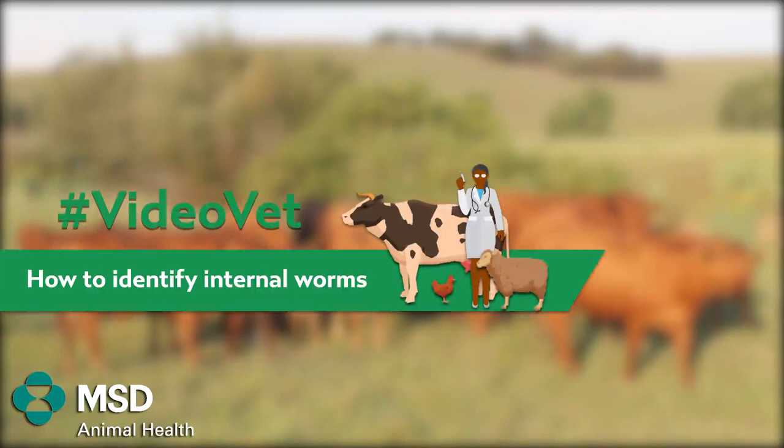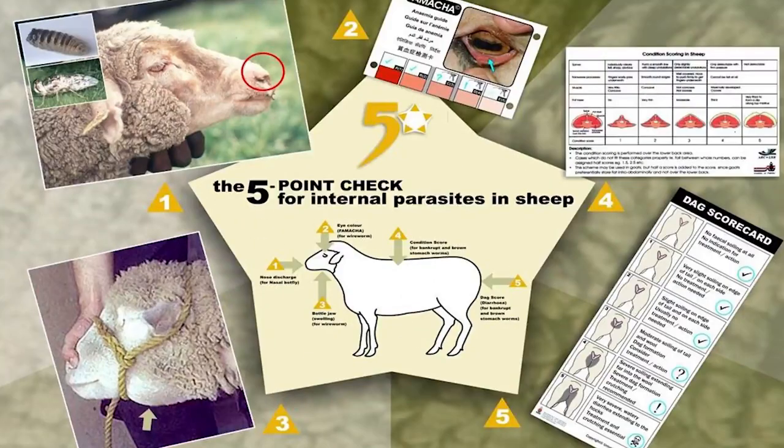It is very important for you as a farmer to identify which worm species is a problem on your farm. This can be done by checking for clinical signs, which we refer to as the five-point check. You check for the nose, you check for bottle jaw under the neck, you check for diarrhea under the tail, you do the FAMACHA chart on the eye to check for anemia, and lastly you do body condition scoring.